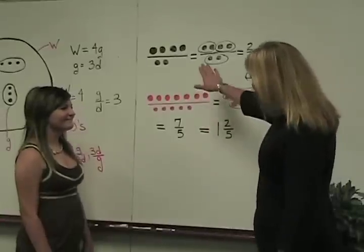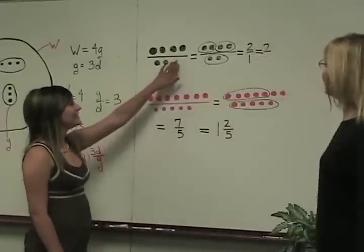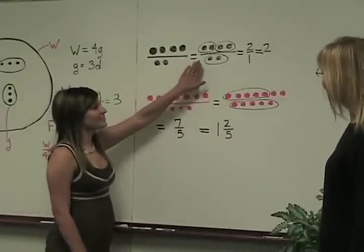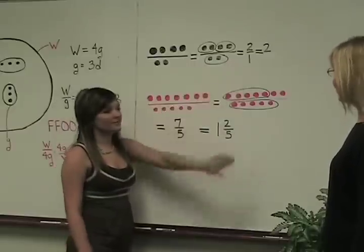Kelsey, can you tell me what you see here? Four dots over two dots, which you can regroup into two groups over one group, which equals two over one.